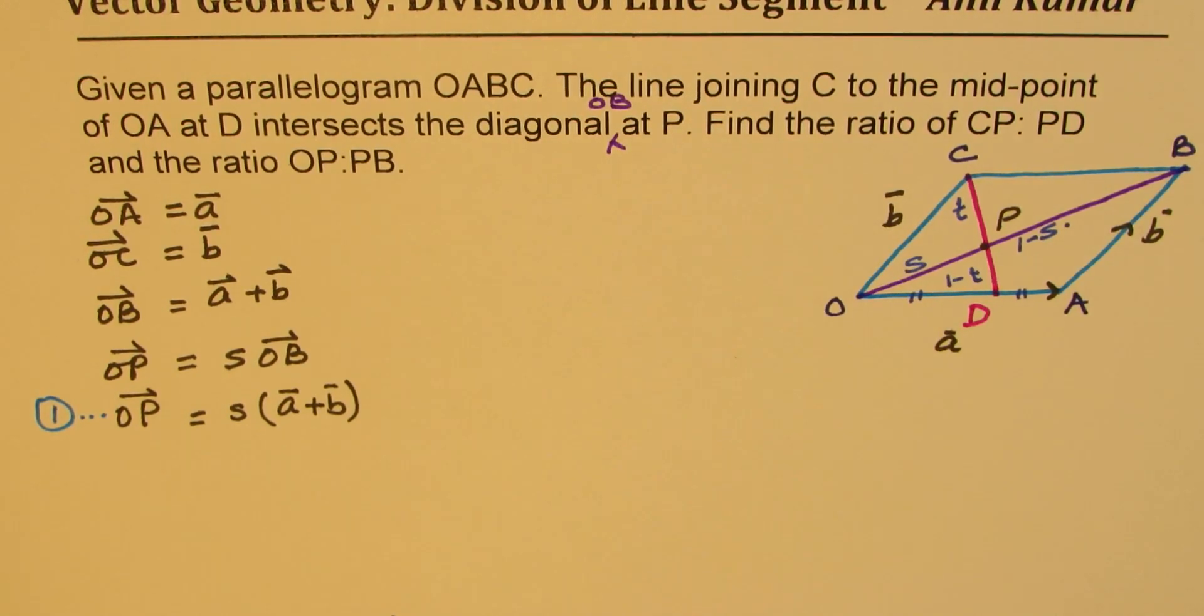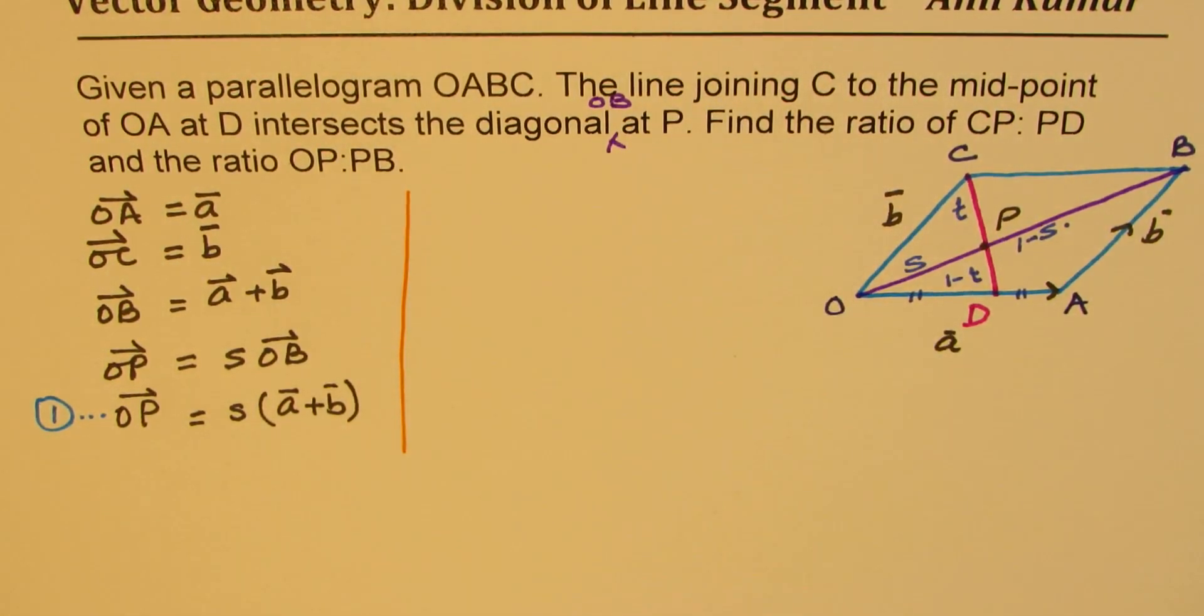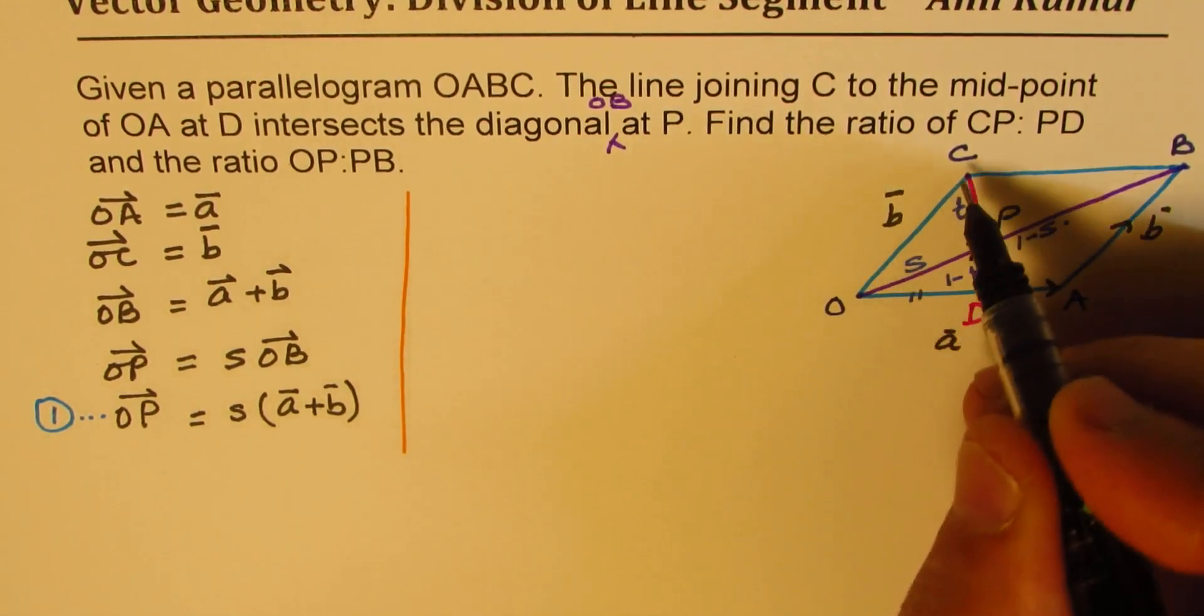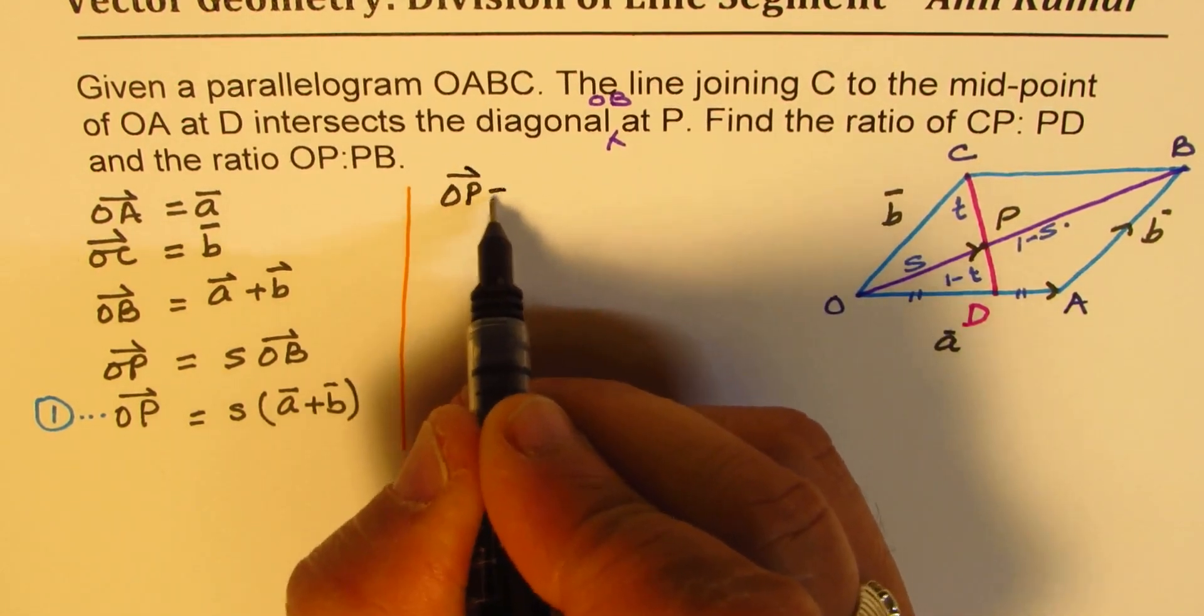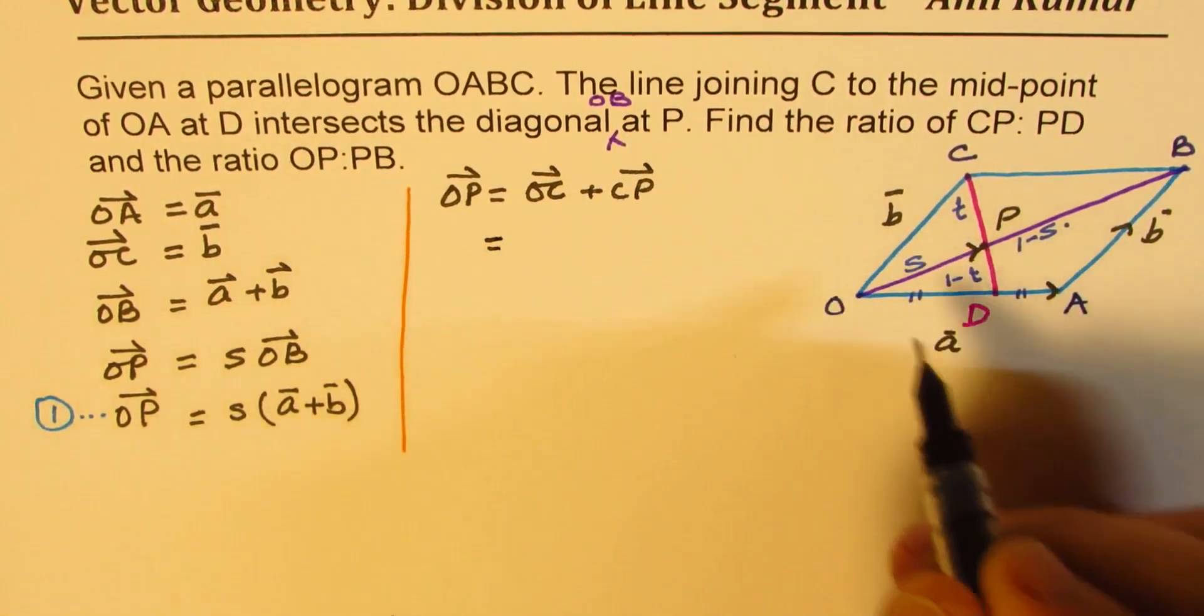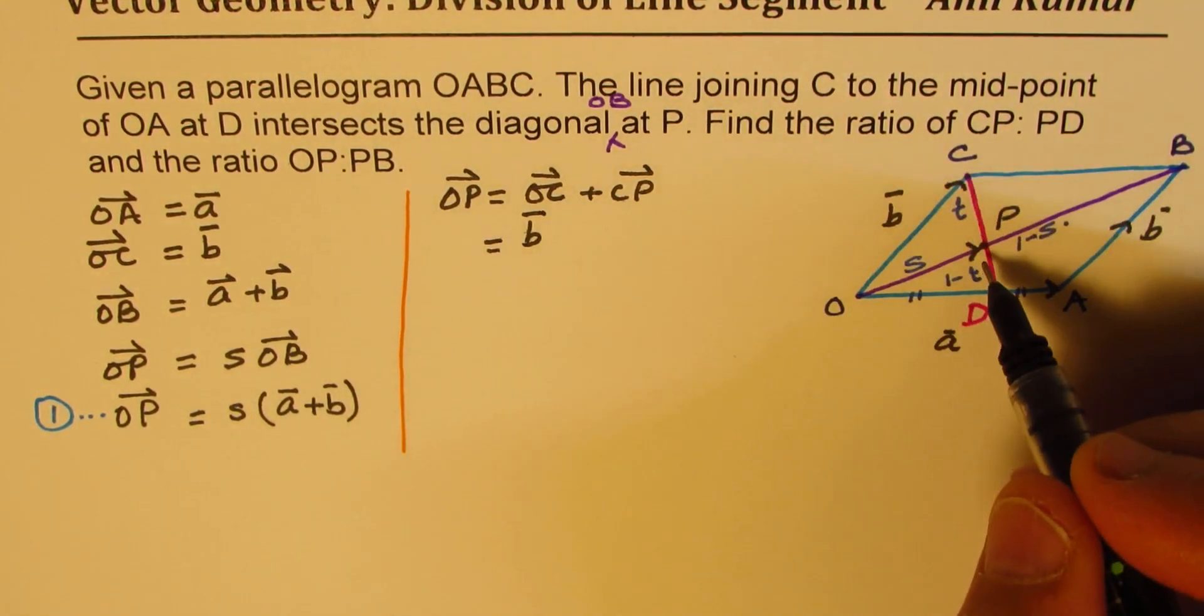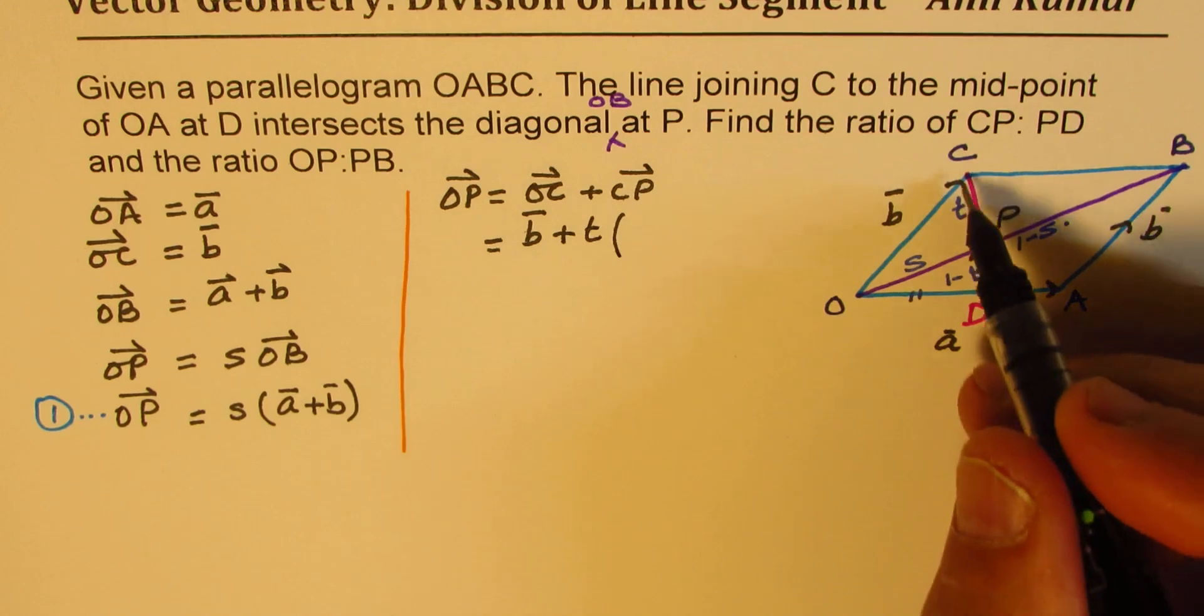Now, we could also write OP as a combination from the other side. So OP could also be written as OC plus CP. So OP equals OC plus CP. O to C is vector B for us, and C to P is T times CD.